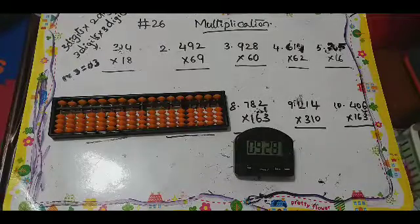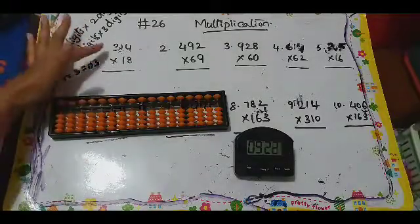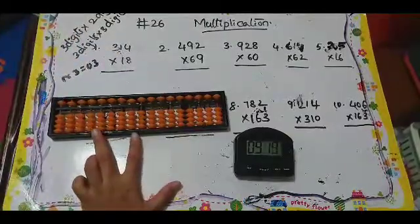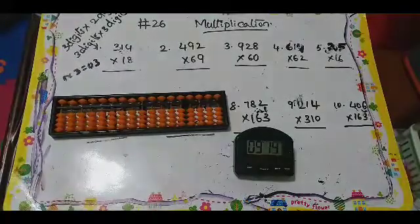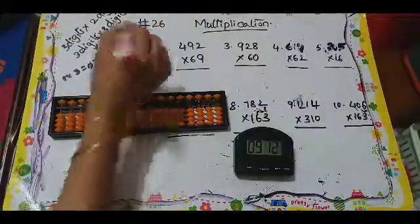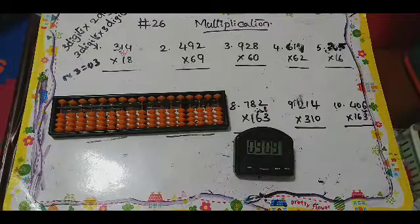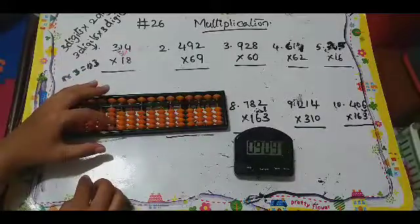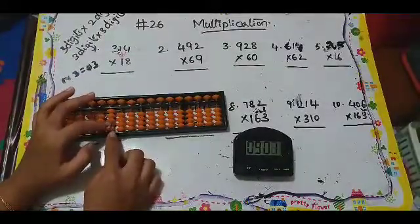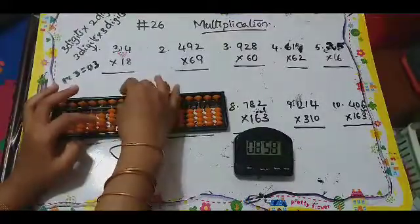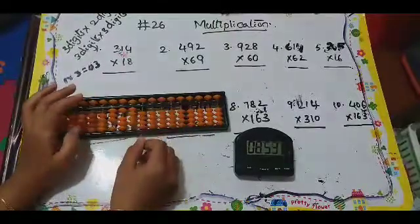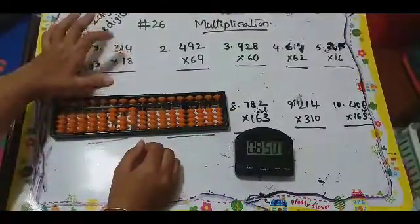Let's see a few examples. Three hundred fourteen times eighteen. Total we have to count how many columns to use: three plus two equals five columns. On the abacus we should use these five columns. First we will multiply with the one: three ones are three, so that is zero three. From the fifth column: zero three, then zero one, then one times four is zero four. Done — one with 314.